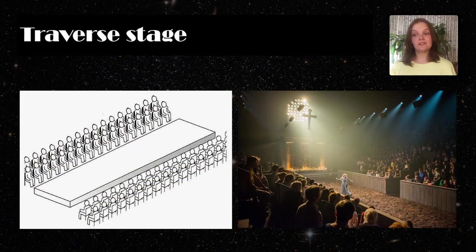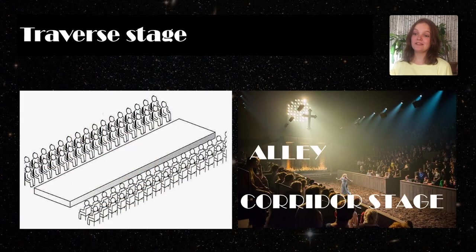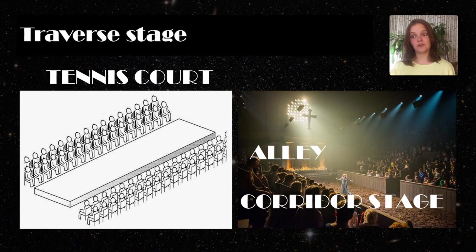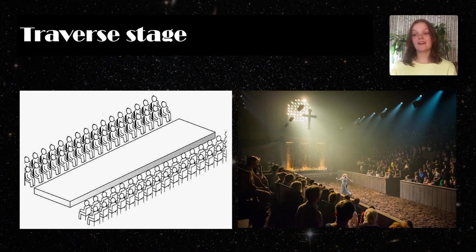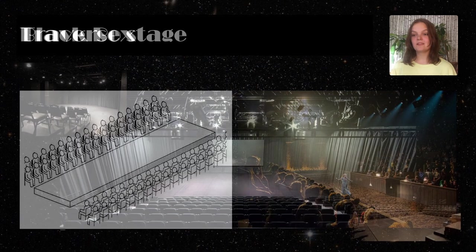A traverse stage, also known as an alley, corridor stage, tennis court, or catwalk, is a type of theatrical layout in which the audience is seated on two sides of the stage, facing each other. It's long and narrow, and the audience can see each other, reminding them that they're at the theater and immersing them in the action taking place on the stage in between them.